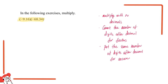Since this question is rather long, let's go through it step by step. First, we need to know that when we have two negative signs, they cancel out and become a positive sign. So these two negative signs cancel out and become positive.